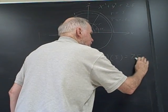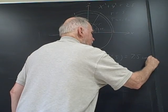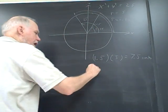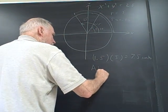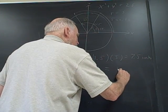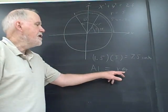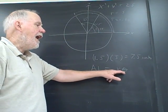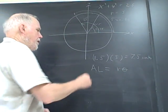And so this gives us a nice formula for arc length. Arc length equals the length of the radius times theta, as long as theta is in radians, not in degrees. This will not work for degrees.